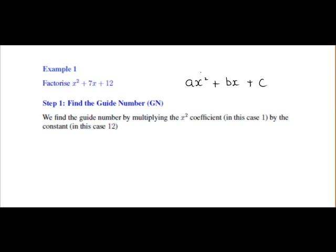Now if you remember previously, the general form of a quadratic is ax squared plus bx plus c. So a is the x squared coefficient and c is the constant. To find the guide number, we are multiplying a by c.